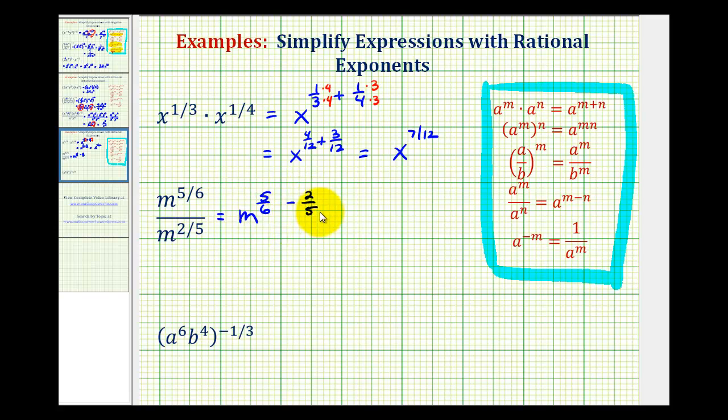And again, when we're subtracting fractions, we have to have a common denominator. And in this case, since the denominators are six and five, the least common denominator would be 30.